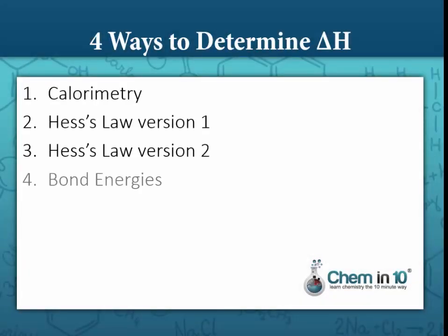There are actually four ways to determine enthalpy. In this lesson we're going to talk about calorimetry — the first way — but there are three other ways: Hess's law (two different methods, which is why they're numbered two and three), and using bond energies.